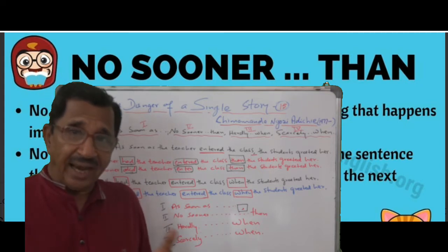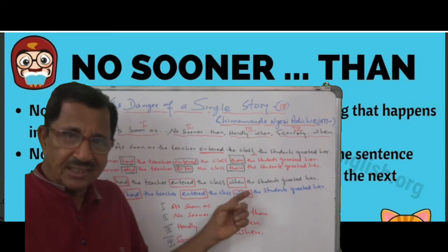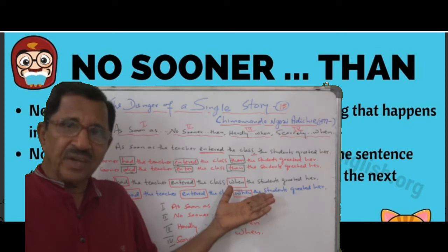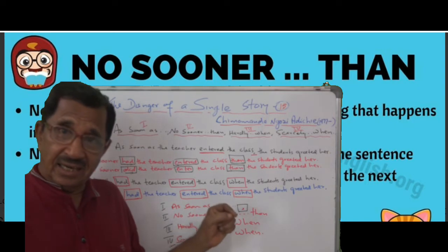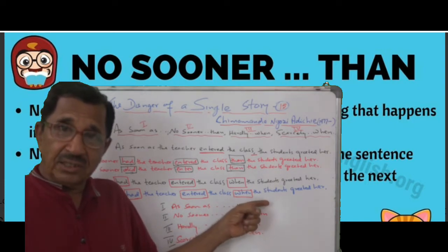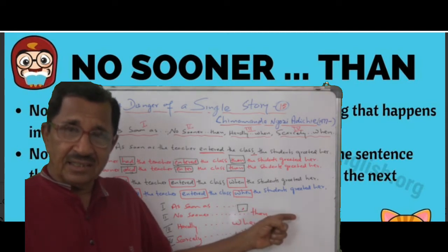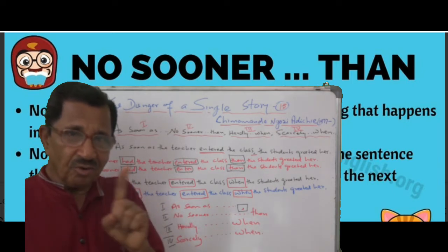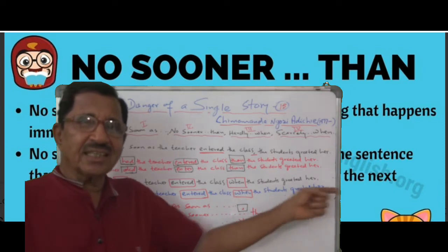So 'ate' is past tense but 'had eaten' is past perfect. In this case it is the same spelling, but 'ended' here is the past perfect form of 'end.' So: 'No sooner had the teacher ended the class, than the students greeted her.' In this second sentence, 'ended' is past participle. Had the teacher ended the class — then the students greeted her.